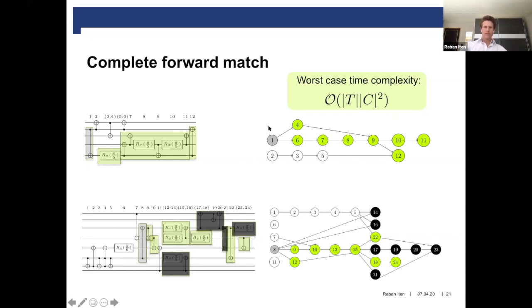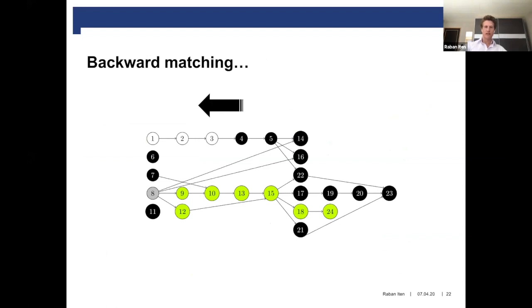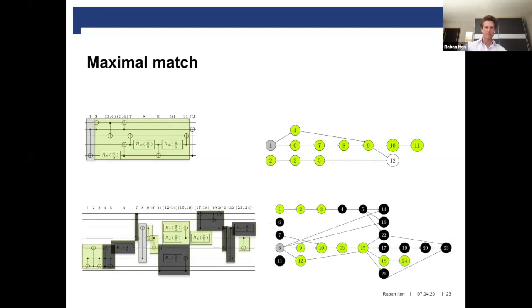The more complicated thing is the backward matching phase, but due to time restrictions I do not have time to go into details here. If you're interested, please have a look at our paper where we go through the same example and explain this process in detail. We end up with a maximum match, which actually matches all of the template apart from one Z gate. If you would have to do this task by eye, it might be a bit time consuming.